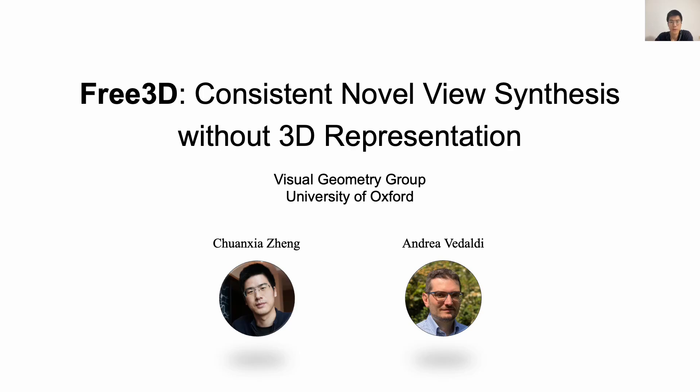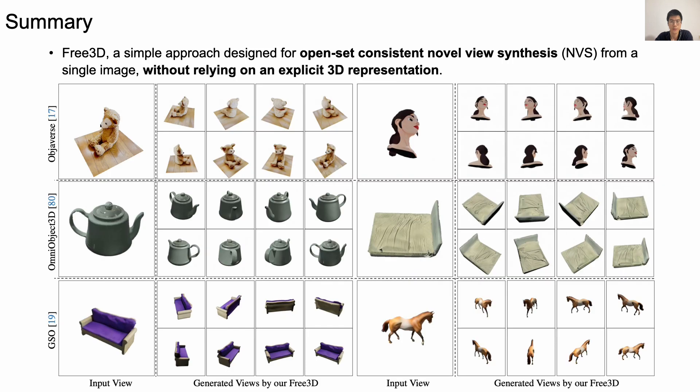Here I introduce our work: Free3D, consistent novel-view synthesis without a 3D representation. This work is done by Tran Shazhen and Andrew Vardelli in the Visual Geometry Group at University of Oxford. In this work, we propose a simple approach for open-set category novel-view synthesis. Given a single image, our model directly outputs consistent novel views without relying on an explicit 3D representation. Here are some examples.